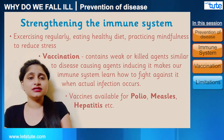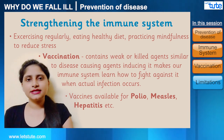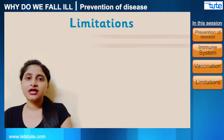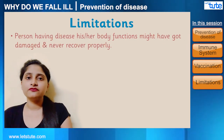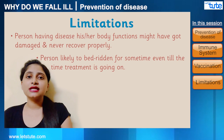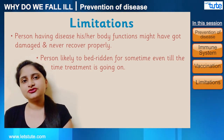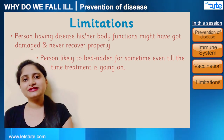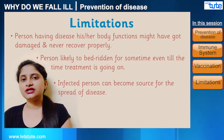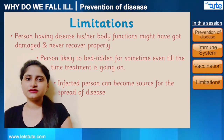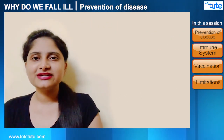So far we have discussed how to get rid of diseases, but there are certain limitations to treatment. Number one: if someone has a disease, their body function may have been damaged and they may never recover properly. Number two: the person is likely to be bedridden for some time during treatment, even while symptoms are being reduced. Number three: if a person has an infectious disease, that person becomes a source for transmission of the disease from one person to another.